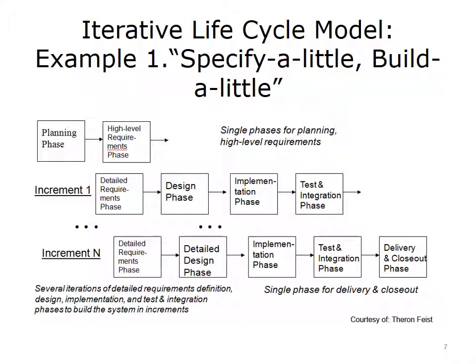The first example is one of many in this family of iterative models. As shorthand to characterize it, we're calling it a specify-a-little, build-a-little model. What's characteristic about it is that you'll have a single phase for planning and a single phase for developing high-level requirements, but after that point, you can decide that you don't want to go ahead with a single design phase because you want to understand the detailed requirements in a more iterative fashion. Guided by the high-level requirements, you would take your first increment as providing more detail for a set of those requirements, and then design a system that will deliver on those requirements, and then proceed to an implementation and test phase.